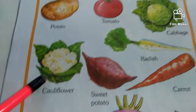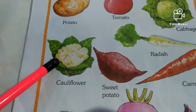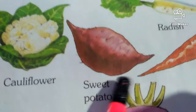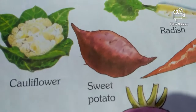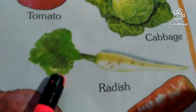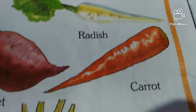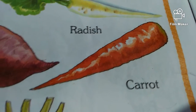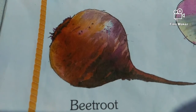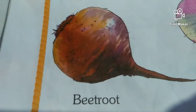Very good. Now next — which vegetable is this? This is cauliflower. Which vegetable is this? This is sweet potato. Which vegetable is this? This is radish. Very good. Which vegetable is this? This is carrot. Very good. Which vegetable is this? This is beetroot.